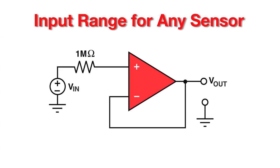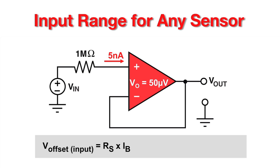Let's go through an example of how the input bias current can affect a circuit. Starting with an amplifier with a low offset voltage of 50 microvolts and an input bias current of 5 nanoamps, the voltage offset caused by the input bias current will be the product of the source resistance and the input bias current. With a 1 megaohm resistance the voltage offset on the input will be 5 millivolts.